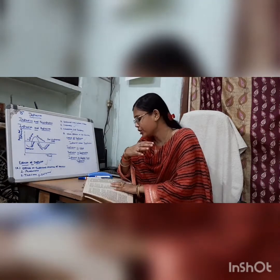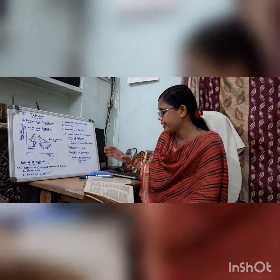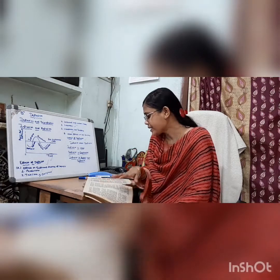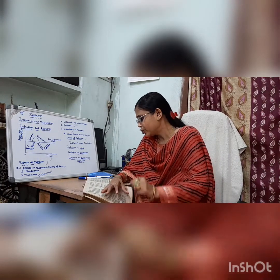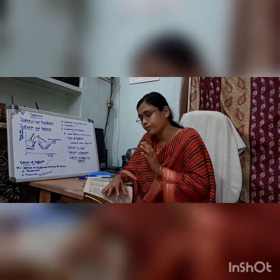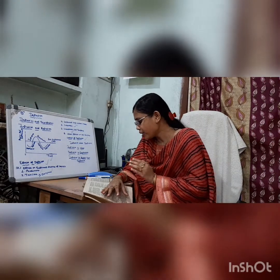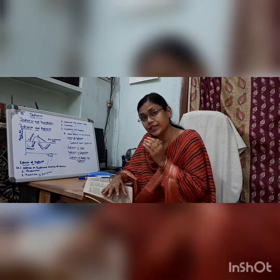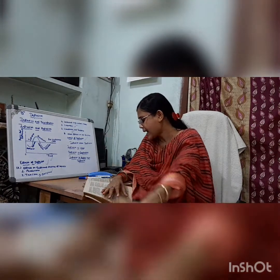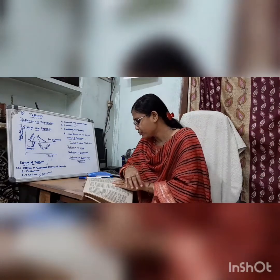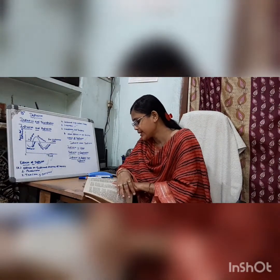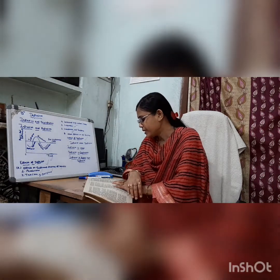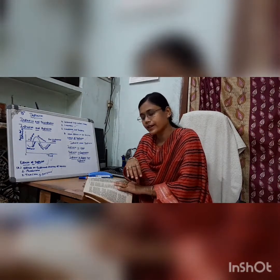Various measures can be taken to increase consumption and investment expenditure in the economy. First, reduction in taxation. The government should reduce the number and burden of various taxes levied on commodities. This will increase the purchasing power of the people. As a result, the demand for goods and services will increase. Moreover, sufficient tax relief should be given to businessmen to encourage investment.